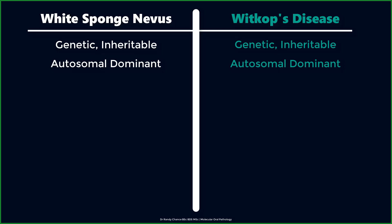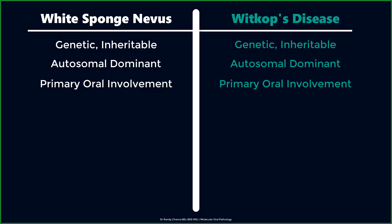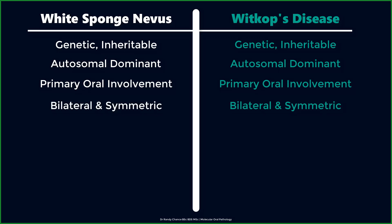Moving on. The oral mucosa for both of these disorders is a primary site of occurrence, and these oral lesions are typically in a bilateral distribution, affecting mostly the buccal mucosa, lips, ventral tongue surface, and occasionally the floor of the mouth. Extraoral mucosal sites may be involved in both cases, but the two disorders do not exhibit skin manifestations. This will be in contradistinction to another pathology, follicular keratosis, which we will discuss in a separate presentation.